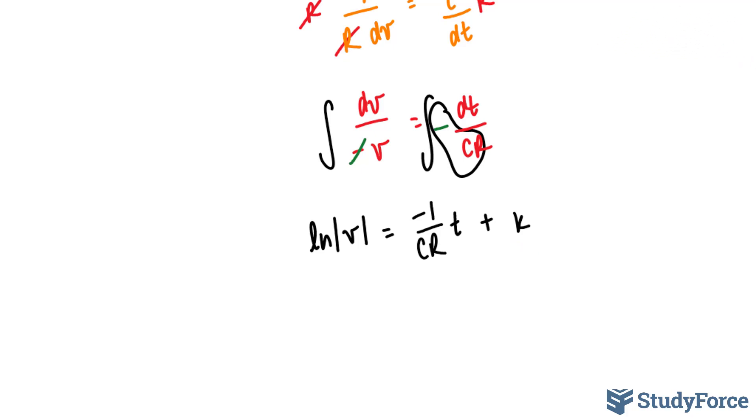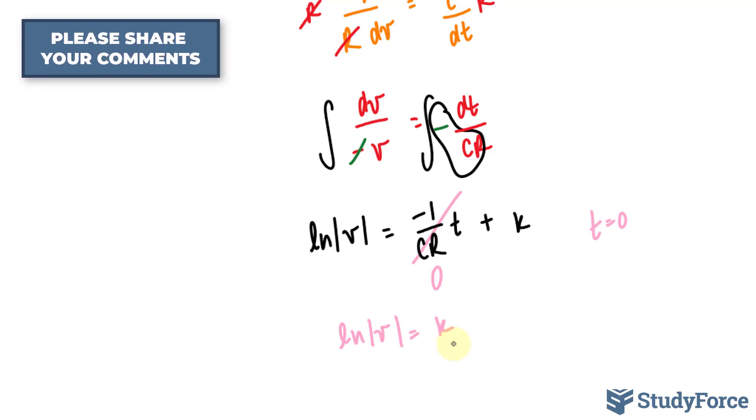Next, I'll set t is equal to zero because that was given in the question. If I set t is equal to zero, this term becomes zero. And we're left with ln absolute of V is equal to k. Now pay attention to this part. It's important. At t is equal to zero, the voltage across the capacitor is the battery voltage E. Therefore, we can say that k is equal to ln E.